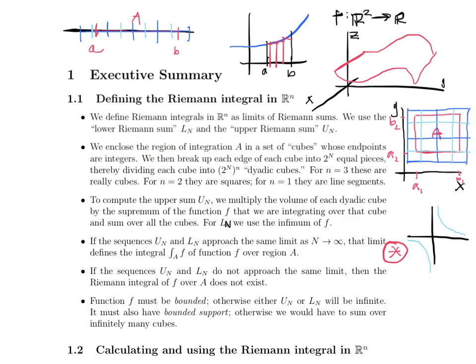For Riemann integrability, you need a bounded function and bounded support — a bounded region of integration. The major takeaways are: the generalization of sub-intervals from univariate calculus to the systematic, one-size-fits-all approach of dyadic cubes; understanding what it means for a function to be Riemann integrable — that its upper and lower sums approach the same limit; and to prove something is not Riemann integrable, show that the upper and lower sums do not approach the same limit.